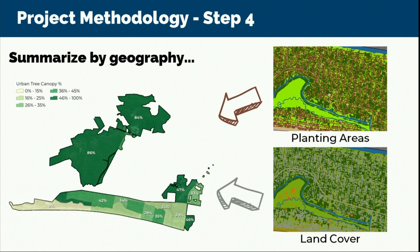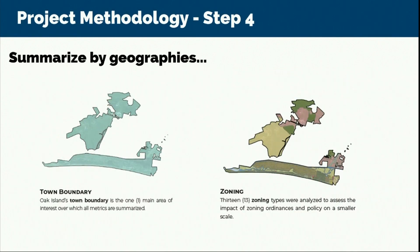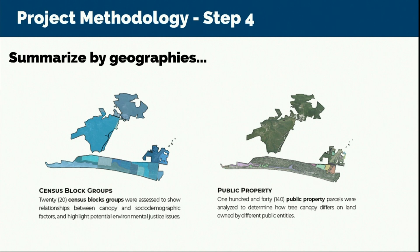We turn that data into usable information so you can develop planting plans, know where plantable space is, and identify unsuitable areas — enabling you to develop policies, ordinances, and management strategies to improve your urban forest. We then summarize the combined data into five assessment scales: the town boundary, zoning types, census block groups, public property, and parcels.